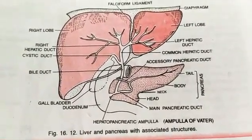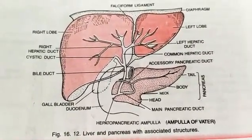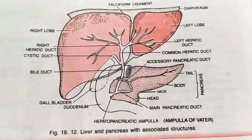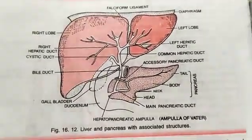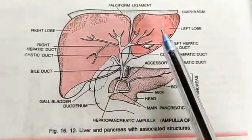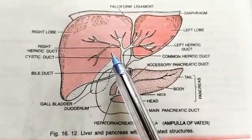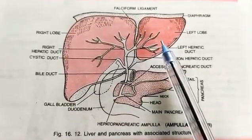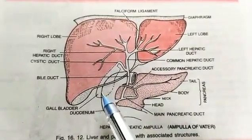Friends, the diagram you are seeing contains a liver, pancreas, and gallbladder. But in this video we will cover only the liver. As you can see, the liver has two lobes — the right lobe and the left lobe. The right lobe is the larger lobe and the left lobe is the smaller lobe. This is the pancreas and this is the gallbladder.